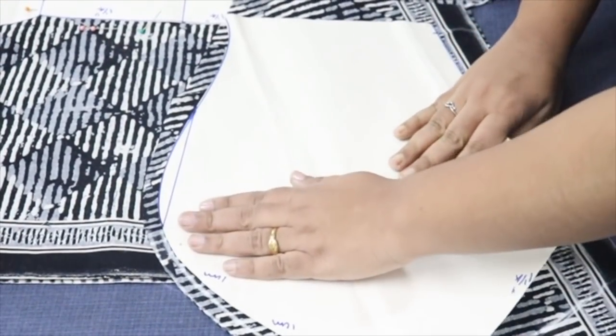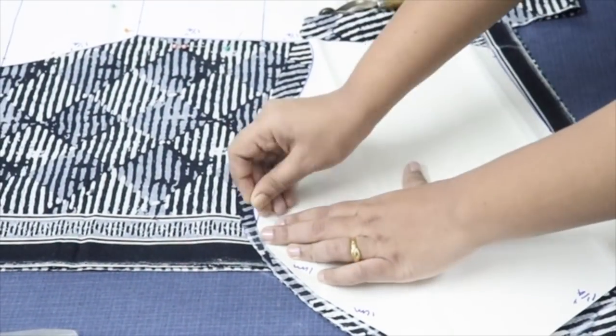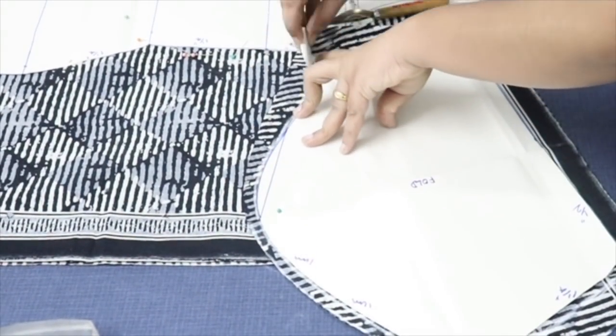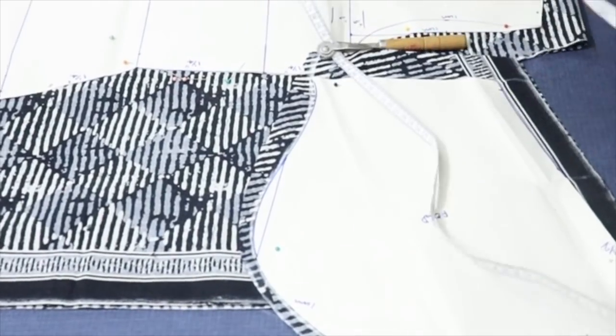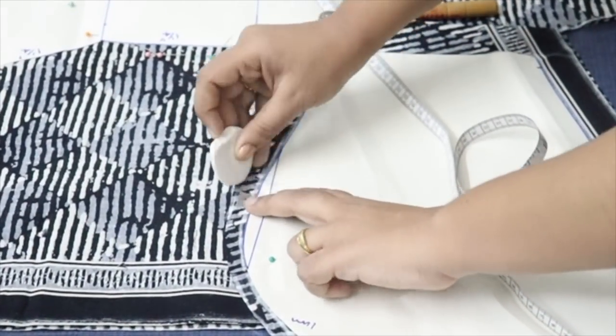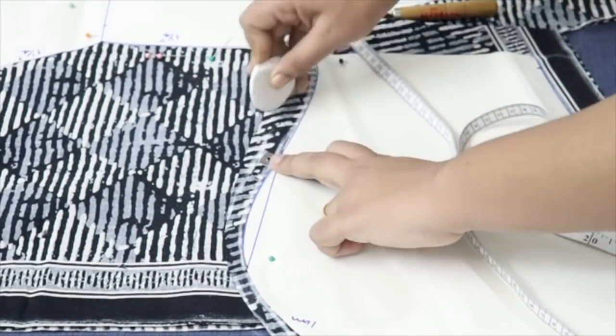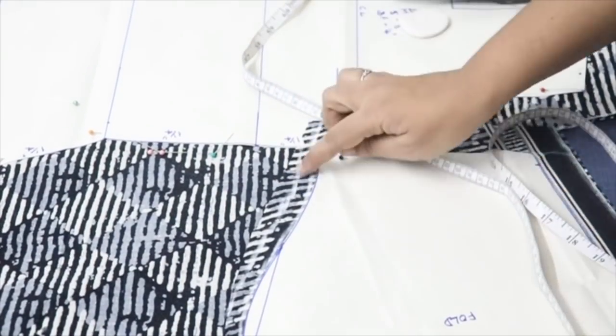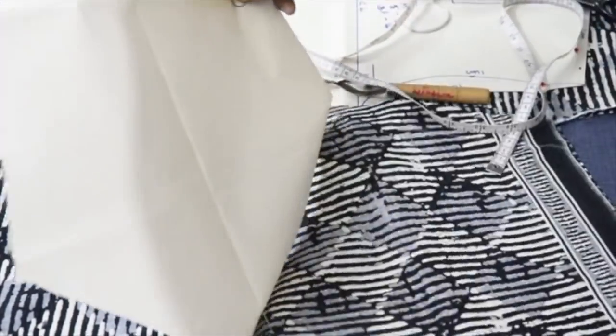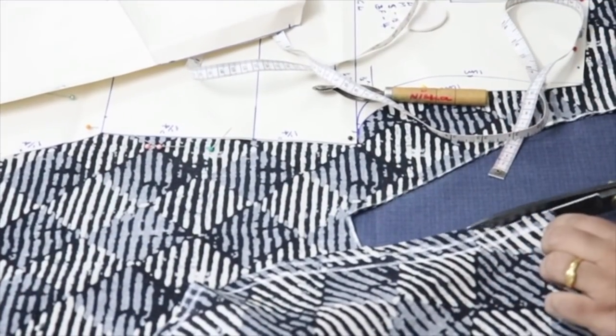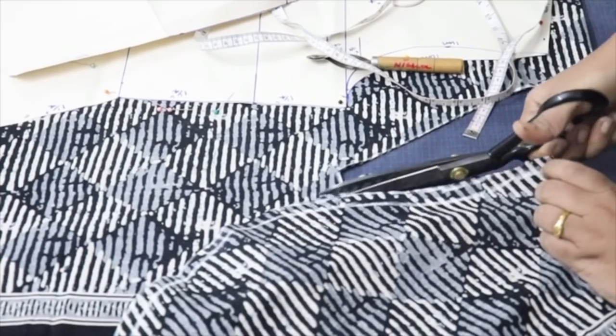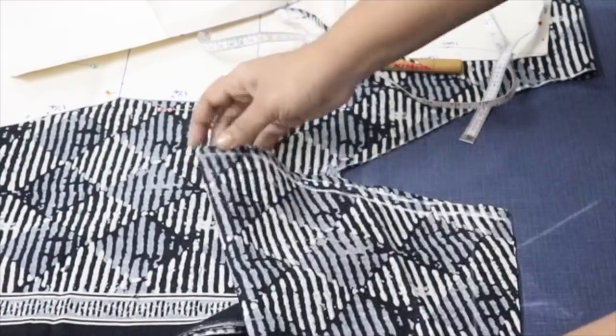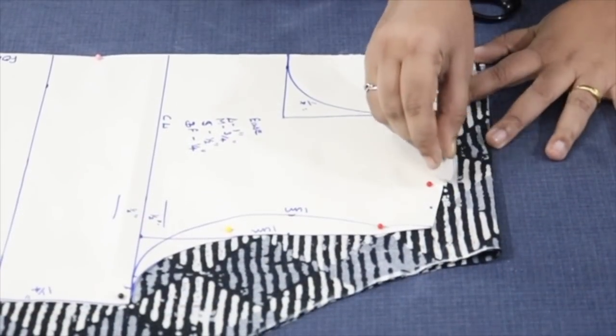Now open and trace the front arm. After tracing the exact marking, give the seam allowance. Now cut and take out the extra fabric only in the front side. So give notches in the front arm to identify while joining.